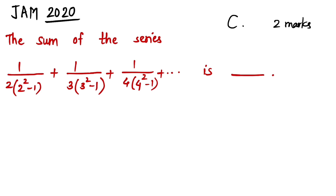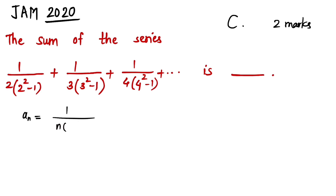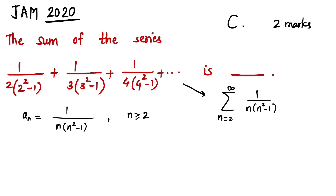Let's solve this question. The general term: looking at the series, this is 1/(2·(2²-1)) + 1/(3·(3²-1)) + 1/(4·(4²-1)) and so on. So the general term aₙ = 1/(n·(n²-1)), where n runs from 2 to infinity. We can write this series as the sum from n=2 to infinity of 1/(n·(n²-1)).